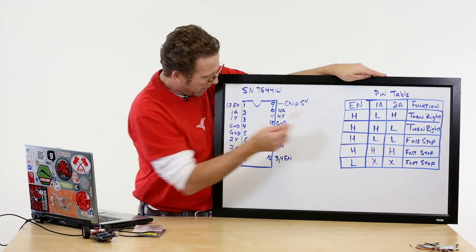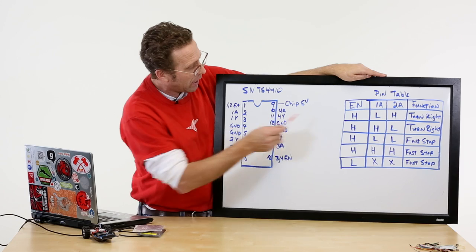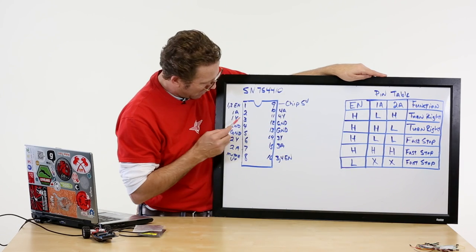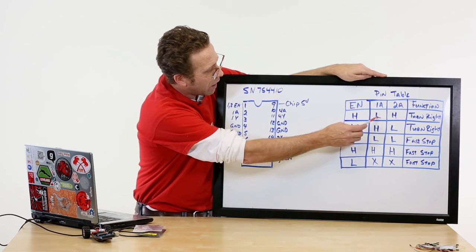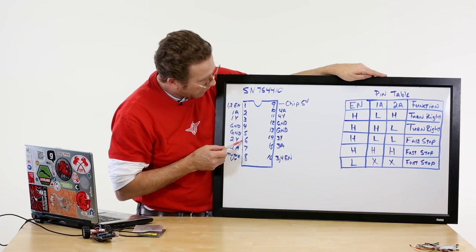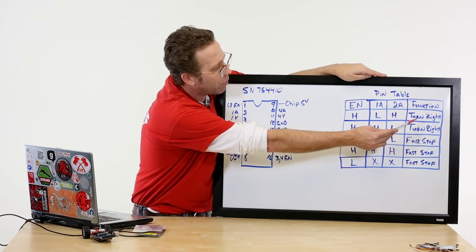If I enable the high pin, my number 1 pin high, and my 1A pin here is low and my 2A pin here is high, my motor turns right.